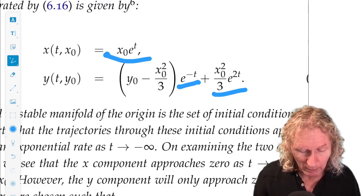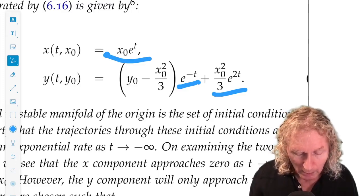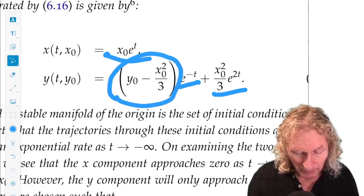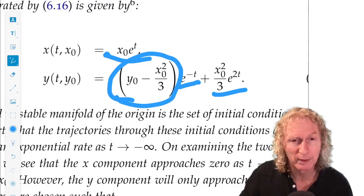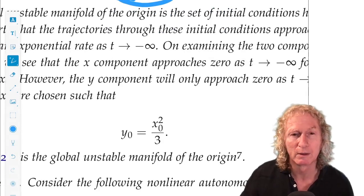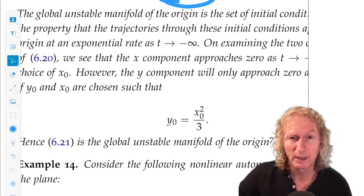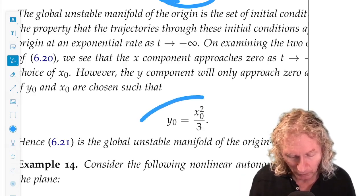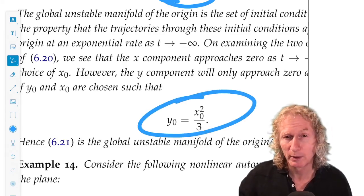So, the constraint on the initial conditions so that the trajectory goes to zero as time goes to minus infinity means that this coefficient on e to the minus t term must be zero. Well, that coefficient being zero means y naught equals x naught squared over three, which is what we just previously derived. This is the global unstable manifold of the origin. Any trajectory that satisfies this constraint will go to zero as time goes to minus infinity at an exponential rate.